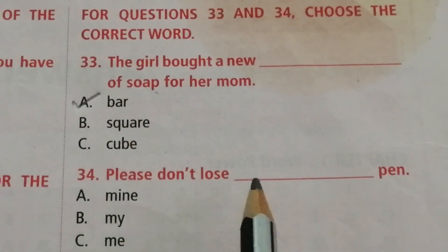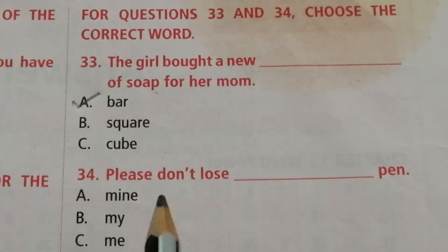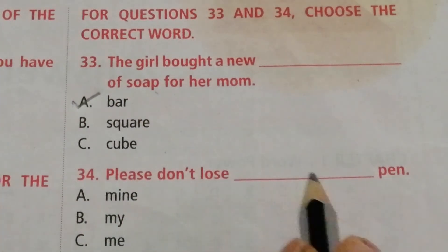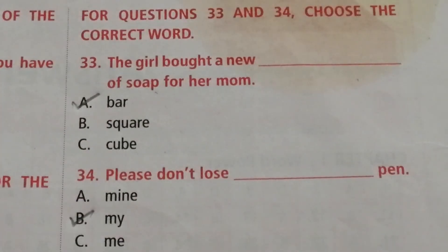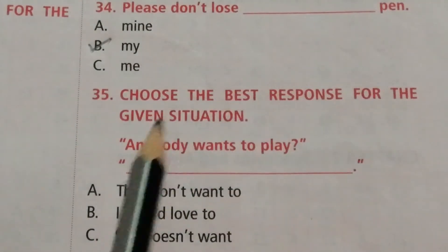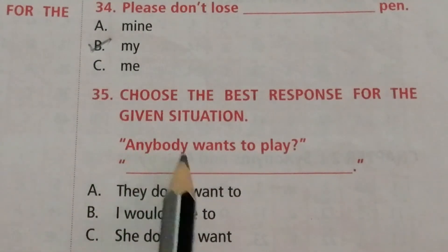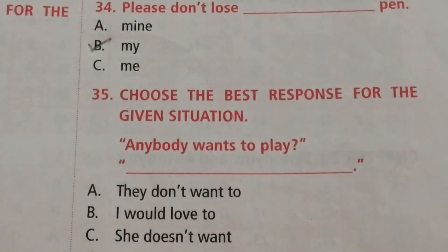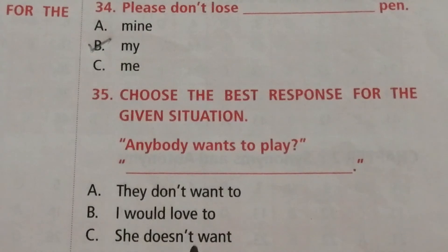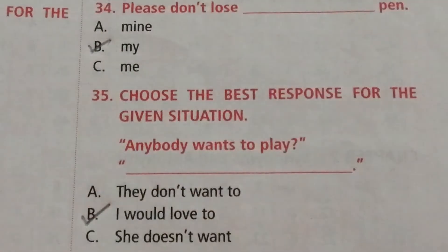Question 34: Please don't lose ___ pen. Options are mine, my, me. The answer is B — my. Please don't lose my pen. Question 35: Choose the best response — Anybody wants to play? Options are they don't want to, I would love to, she doesn't want. The answer is B — I would love to.